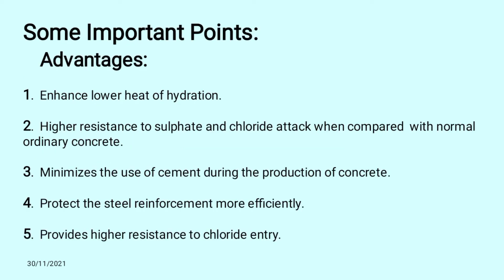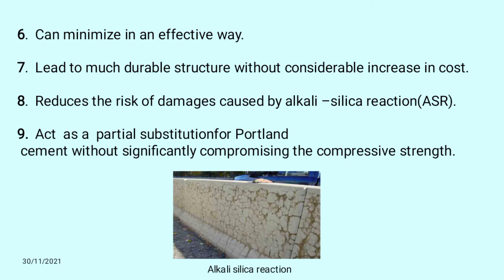There are some important points which are very useful for GGBS. First, it enhances the lower heat of hydration. Second, high resistance to sulfate and chloride attack when compared with normal ordinary concrete, and it minimizes the use of cement during the production of concrete. Third, it protects the steel reinforcement more efficiently and provides high resistance to chloride entry. It leads to much more durable structures without considerable increase in cost, reduces the risk of damages caused by alkali silica reaction, and acts as a partial substitution for Portland cement without significantly compromising the compressive strength.